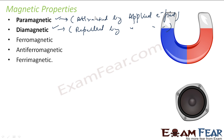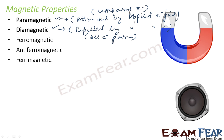In diamagnetic, all electrons are paired — all electrons are paired. In paramagnetic, we have unpaired electrons. Since we have unpaired electrons, they are attracted towards the magnetic field.